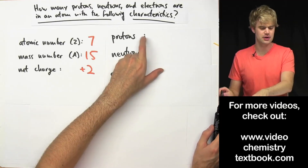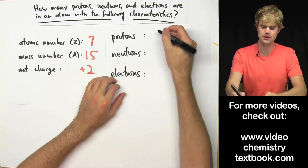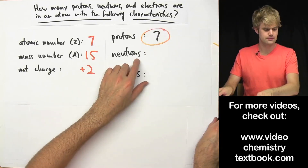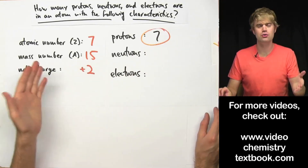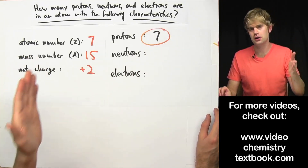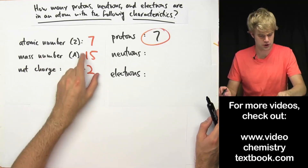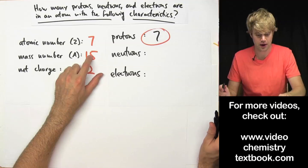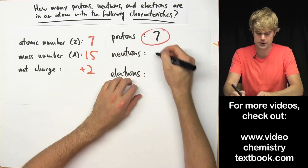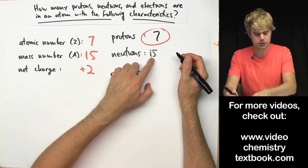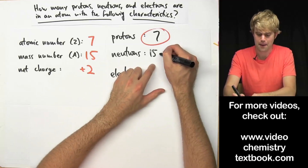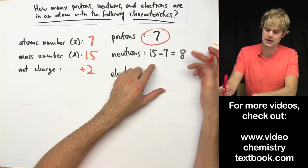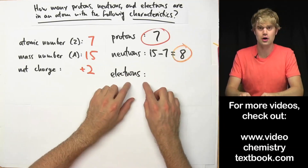Protons — that is going to be easy, because the number of protons is the same thing as atomic number, so that's going to be 7. Now what about neutrons? Mass number is protons plus neutrons, so this 15 here is protons and neutrons together. I already know how many protons there are, so I can do: mass number minus the number of protons equals 8 — the number of neutrons.